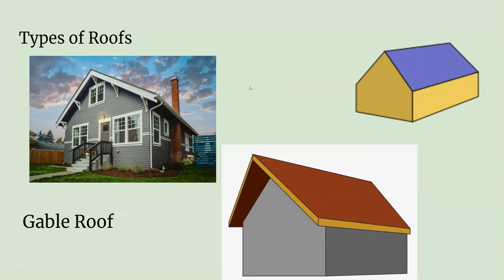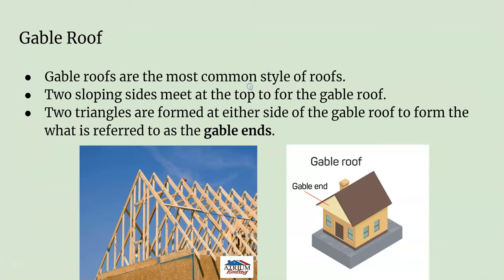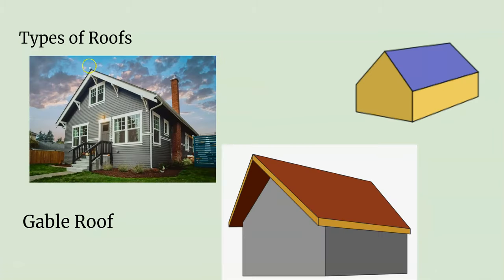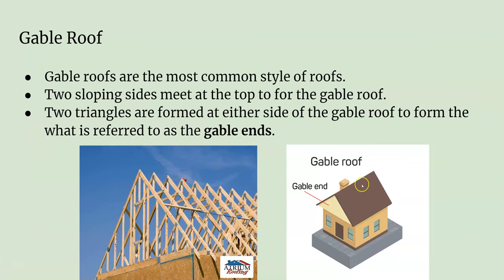The most basic type of roof — and most houses have this type — is called a gable roof, where you have two sloping sides. It's pretty much the prototypical roof you think of on a house. It's tried and true: water falls off on each side. It just works, and you can have your overhangs on each side to protect the gable ends.